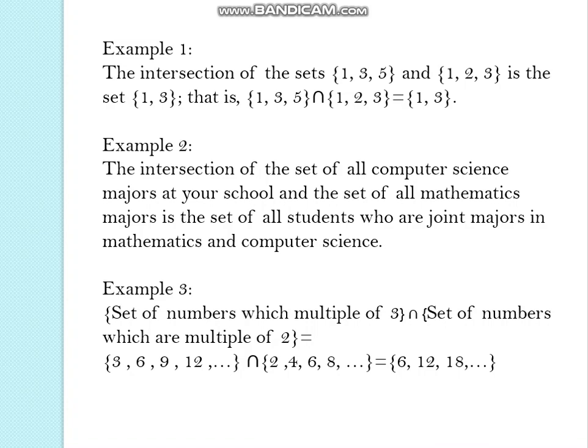In the intersection of all computer science majors and all the mathematics majors the intersection will be the set of all the students who are joint majors in mathematics and computer science. That means they have both subjects mathematics as well as computer science.